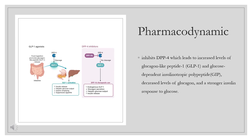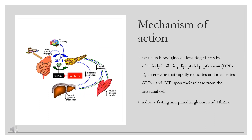Pharmacodynamics: Citagliptin inhibits DPP-4, which leads to increased levels of glucagon-like peptide-1 (GLP-1) and glucose-dependent insulinotropic polypeptide (GIP), decreased levels of glucagon, and a stronger insulin response to glucose. Mechanism of Action: Inhibition of DPP-4 by citagliptin slows DPP-4-mediated inactivation of incretins like GLP-1 and GIP. Incretins are released throughout the day and upregulated in response to meals as part of glucose homeostasis. Reduced inhibition of incretins increases insulin synthesis and decreases glucagon release in a manner dependent on glucose concentrations. These effects lead to an overall increase in blood glucose control, demonstrated by reduced glycosylated hemoglobin (HbA1c).